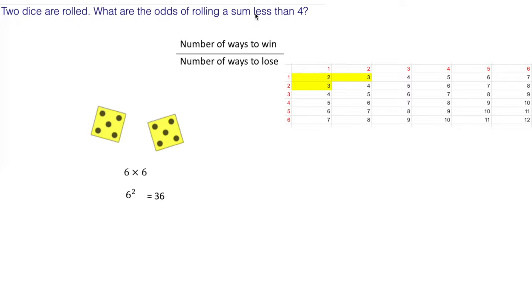The odds of rolling a sum less than four: you could roll a sum of two or three, and there's only three of them. There are three ways for you to win. That means there are 33 ways for you to lose because there's only 36 numbers you could roll. 36 take away three equals 33.